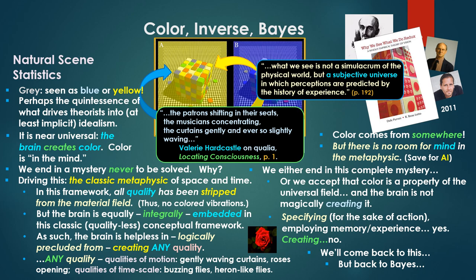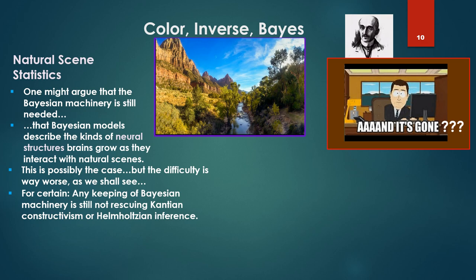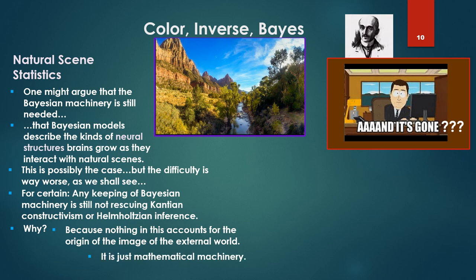Now one might argue that Bayesian machinery is still needed, that Bayesian models describe the kinds of neural structures brains grow as they interact with natural scenes. This is possibly the case, but the difficulty is way worse as we shall see. For certain, any keeping of Bayesian machinery is still not rescuing Kantian constructivism or Helmholtzian inference. Why? Because nothing in this, nothing in Bayes, the Bayesian accounts, account for the origin of the image of the external world. It's just mathematical machinery.